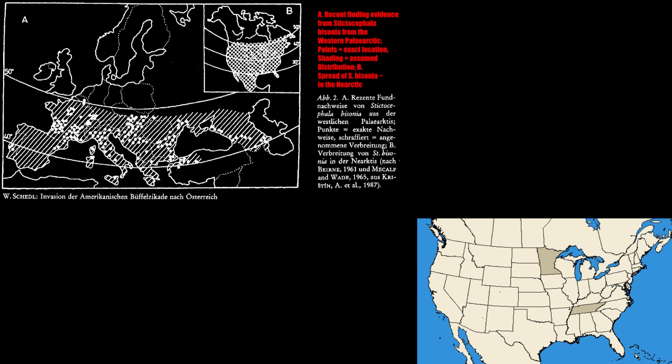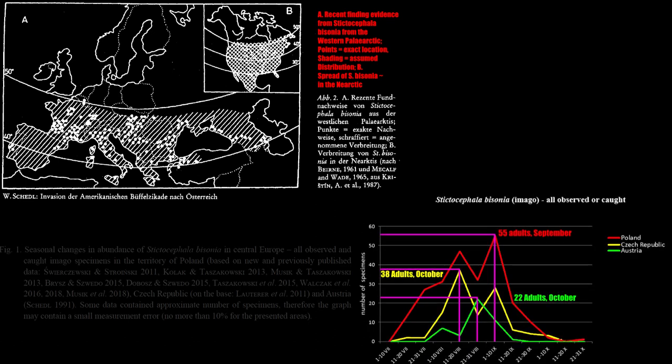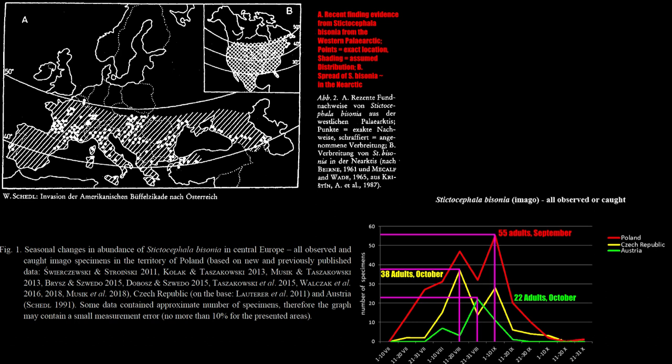Stictocephala bisonia, the buffalo treehopper, is native to eastern and midwestern North America, but has successfully established in western North America, Hawaii, and many parts of central, eastern, and southern Europe.